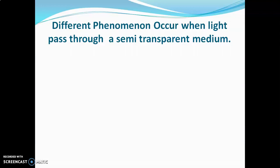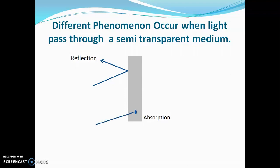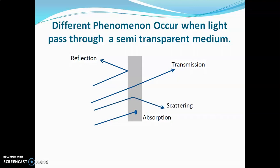Which phenomena will occur when light is allowed to pass through a semi-transparent medium? Suppose light is allowed to pass through a semi-transparent medium. Some radiations will get reflected from the sample solution, some will be absorbed, some will be transmitted, and some will get scattered. If the sample solution is homogeneous, the amount of reflection will be only 4% and the amount of scattering will be negligible.